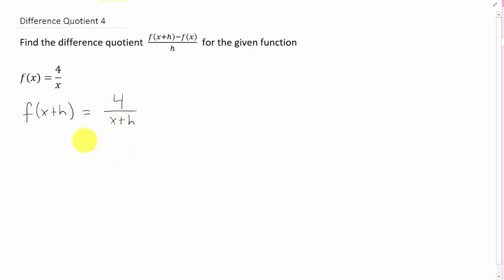Now, there's nothing to simplify here, so let's just look at our difference quotient formula. I'm going to replace our f of x plus h in the formula with what we got, and f of x was given to us. I'm going to replace the given function right there, and we have a divided by h.